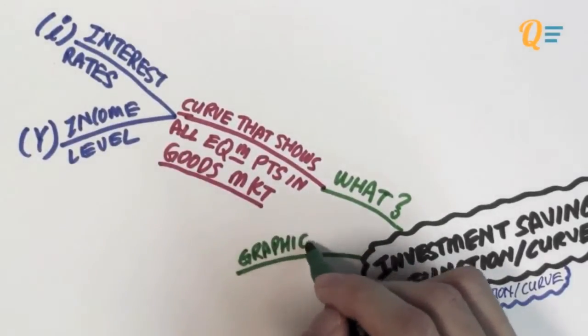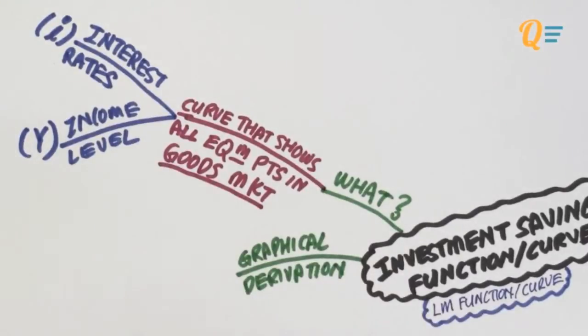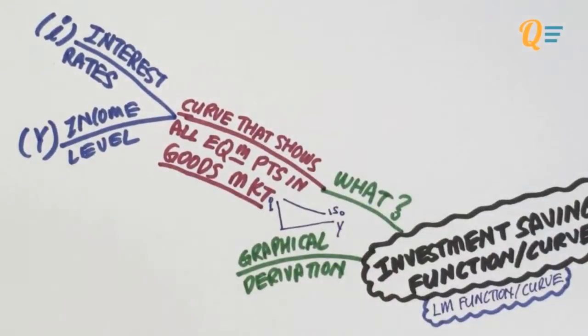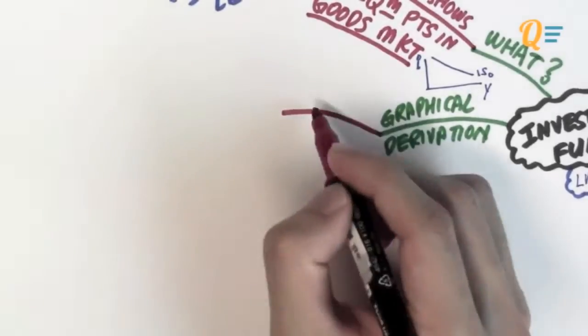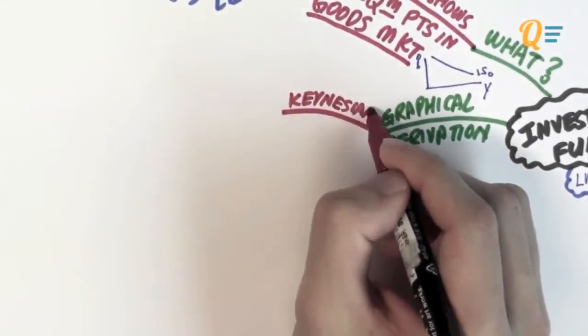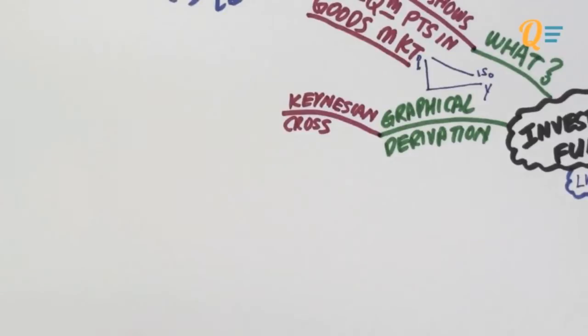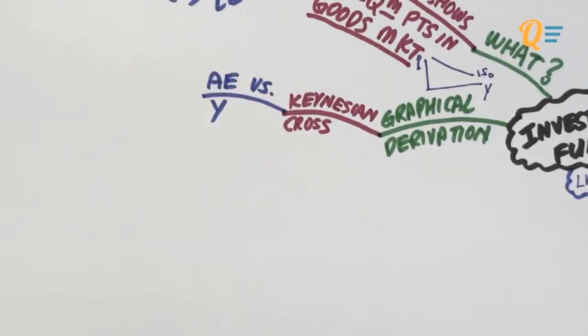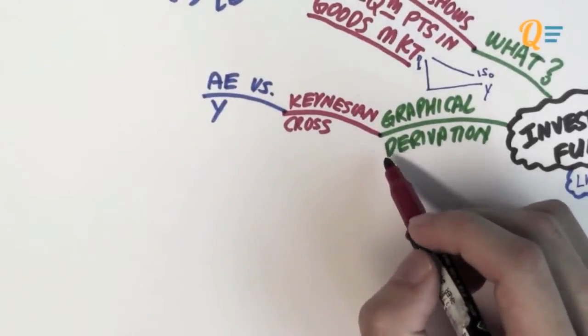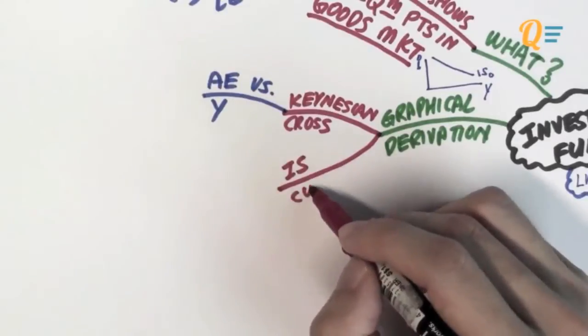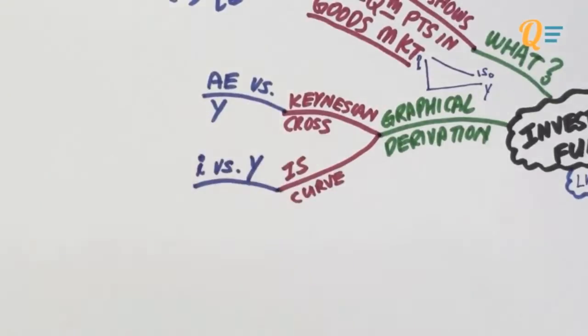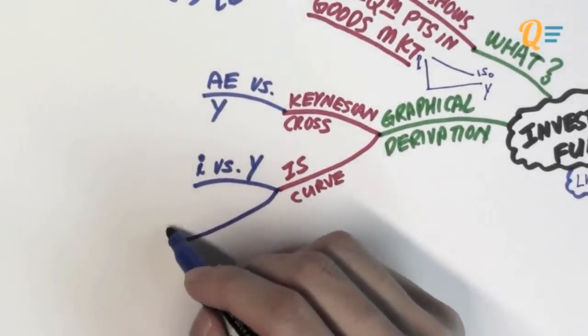So I suppose that was really easy to understand. Let's look at the graphical derivation of the IS curve. Before we go into that, just let me show you that the IS curve is actually a downward sloping curve on the interest rates versus income graph. So what we're going to need to derive this using graphs is the Keynesian cross diagram. The Keynesian cross diagram has got aggregate expenditure on the vertical axis and it's got income on the horizontal axis. So that is how you're going to derive your IS curve.